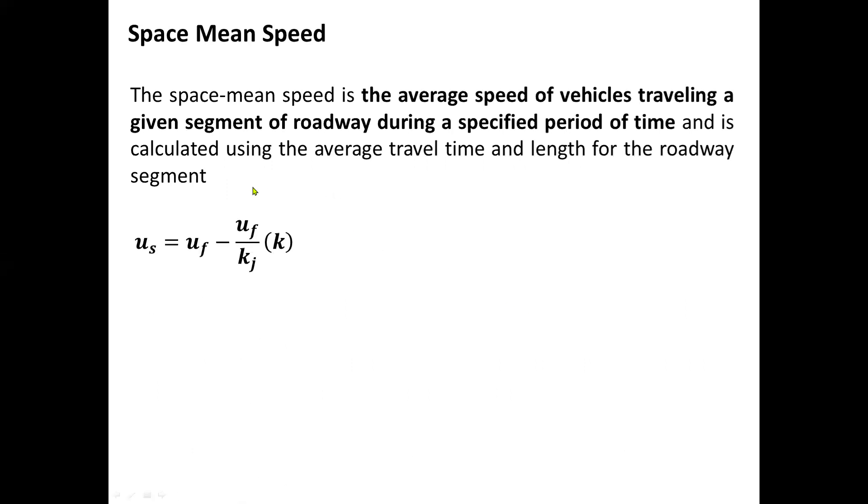And this is our formula to calculate the value or amount of space mean speed: U sub s equals U sub f minus U sub f all over K sub j to be multiplied by K. K sub j is the jam density in vehicles per hour, U sub f is the free flow speed, K is the density value, and U sub s is the space mean speed.